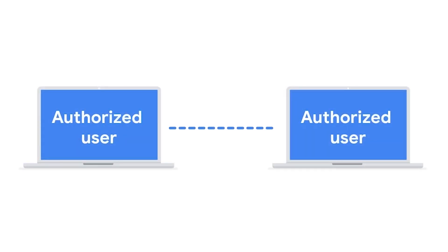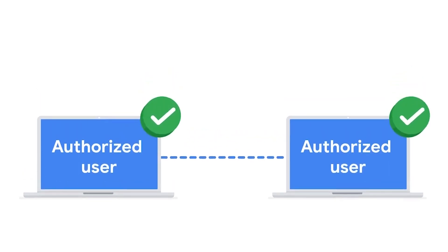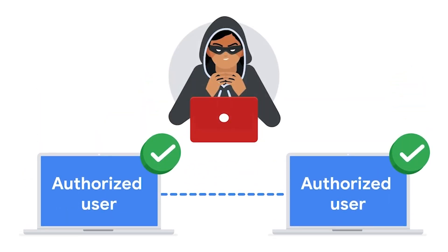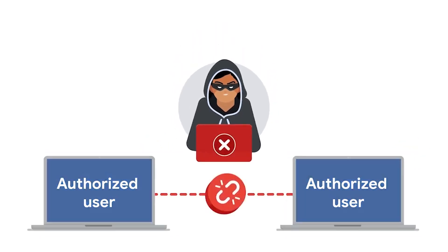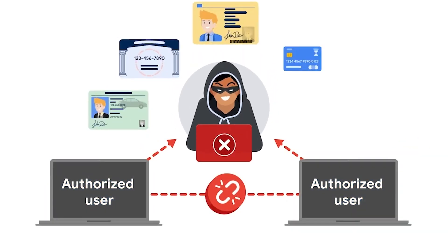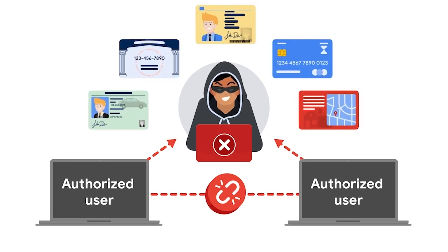Malicious actors may insert themselves in the middle of an authorized connection between two devices, then use packet sniffing to spy on every data packet as it comes across their device. The goal is to find valuable information in the data packets that they can then use to their advantage. Malicious actors can access a network packet with a packet sniffer and make changes to the data, such as altering a recipient's bank account number. Packet sniffing can be passive or active.